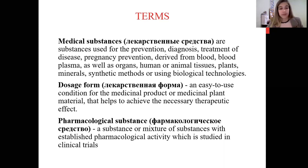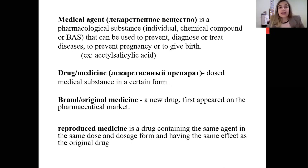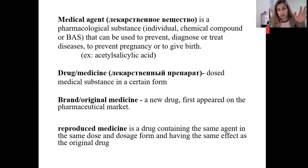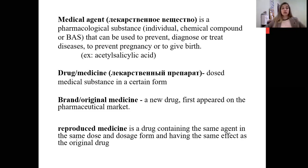A medical agent is a pharmacological substance — an individual chemical compound or biologically active substance — that can be used to prevent, diagnose, or treat diseases. For example, acetylsalicylic acid. The difference is that a medical agent is one individual molecule or compound, not a complex mixture.